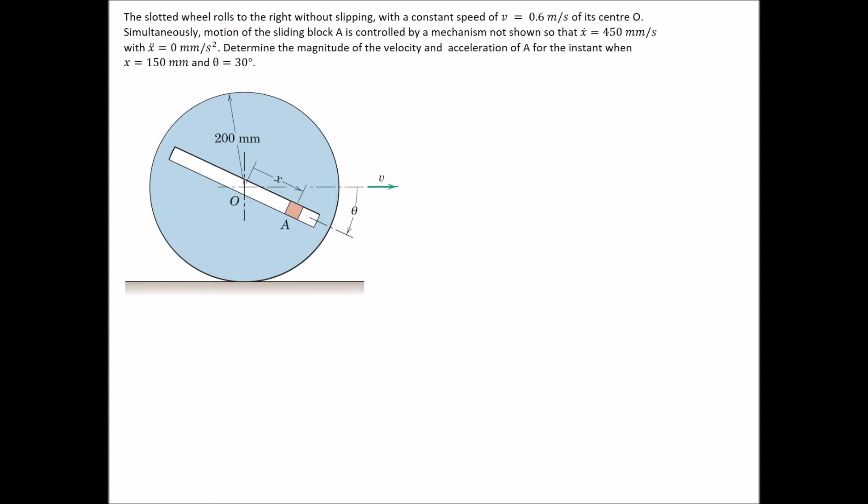The slotted wheel rolls to the right without slipping, with a constant speed of 0.6 m/s of its centre O. Simultaneously, the motion of the sliding block A is controlled by a mechanism not shown, so that x-dot is 450 mm/s and x-double-dot is 0 mm/s squared. We're asked to determine the magnitude of the velocity and acceleration of A for the instant when x is 150 mm and theta is 30 degrees.